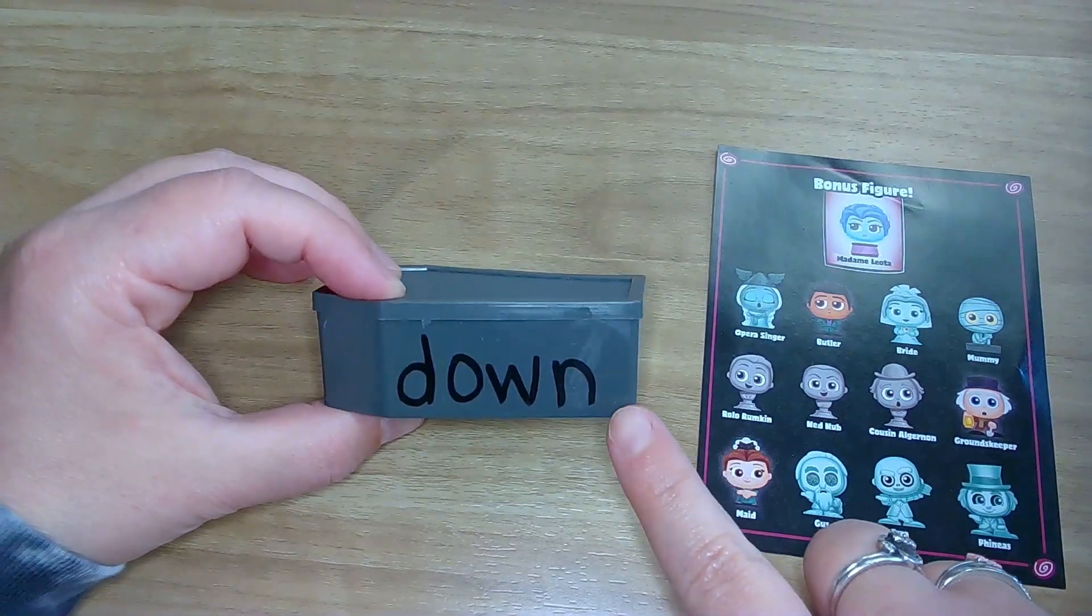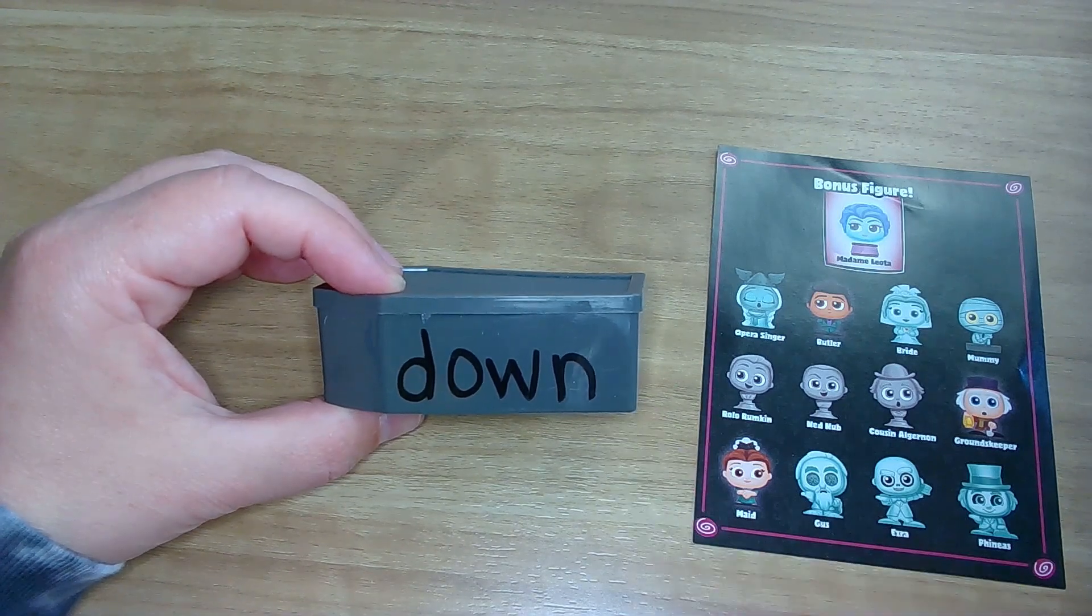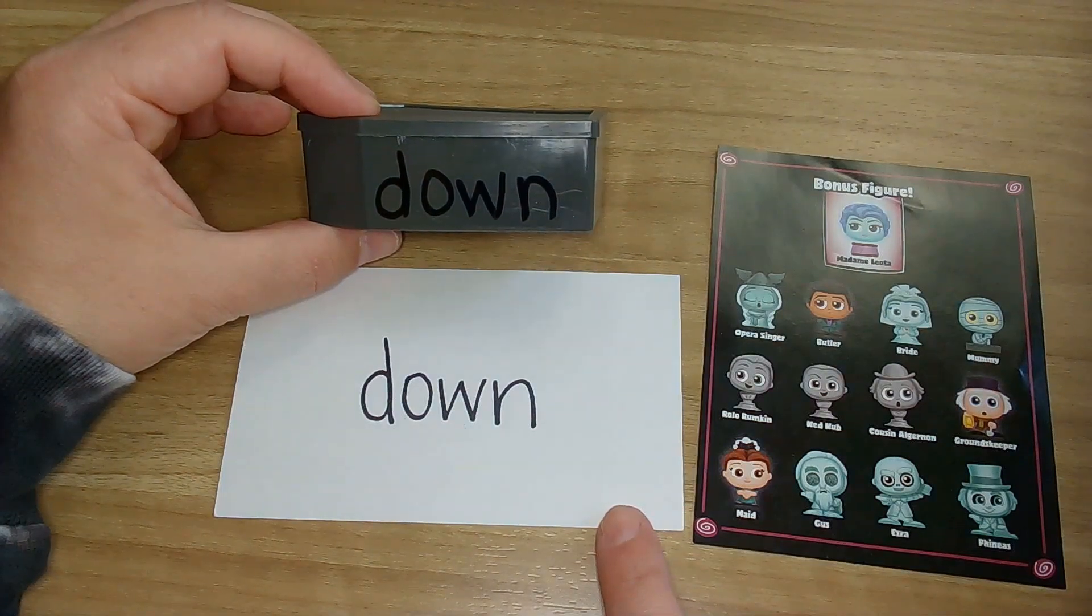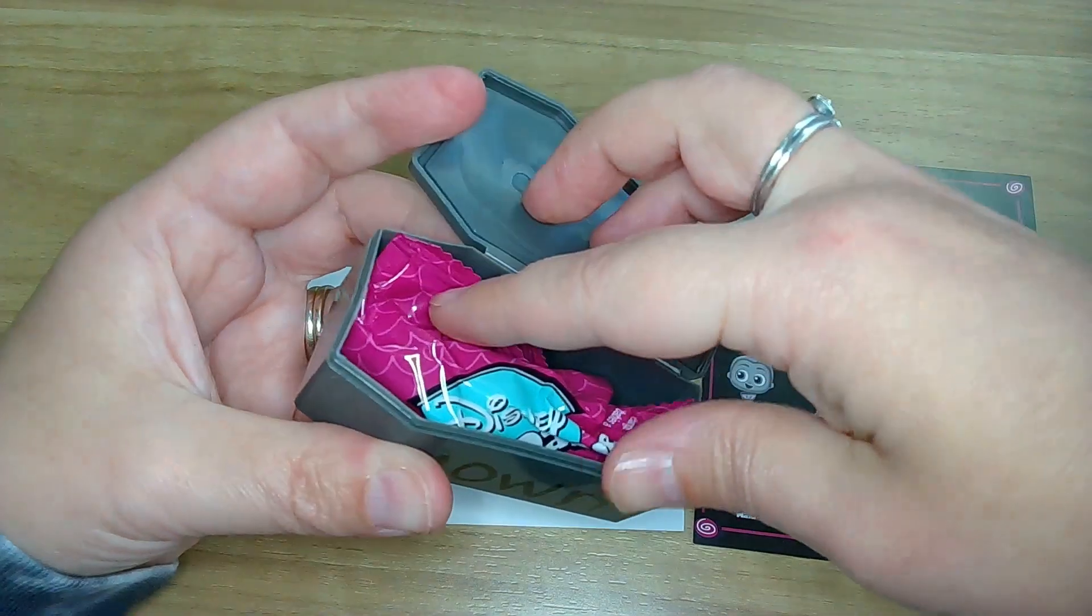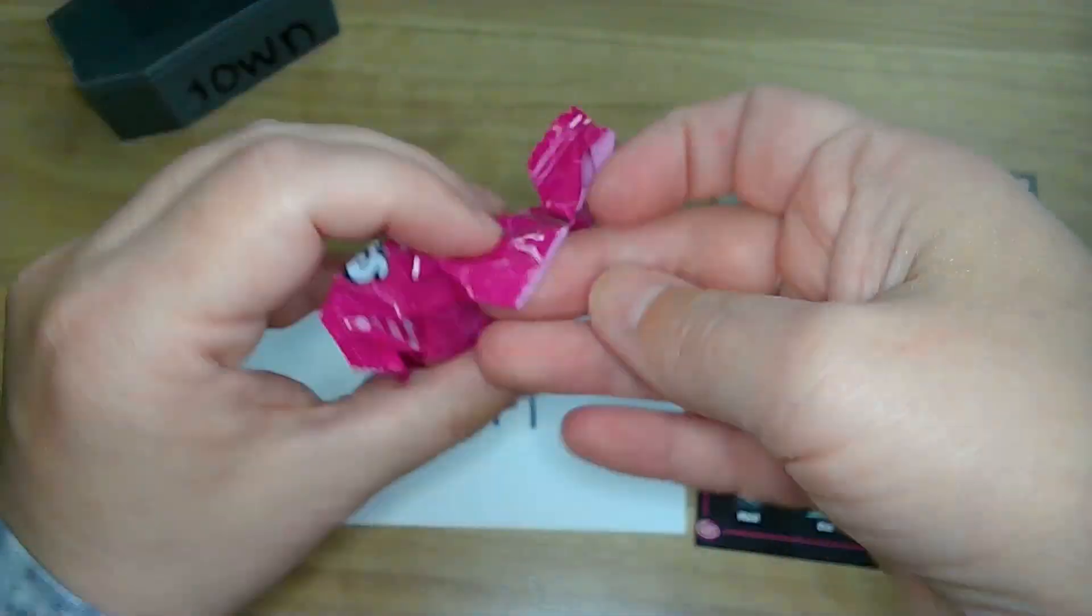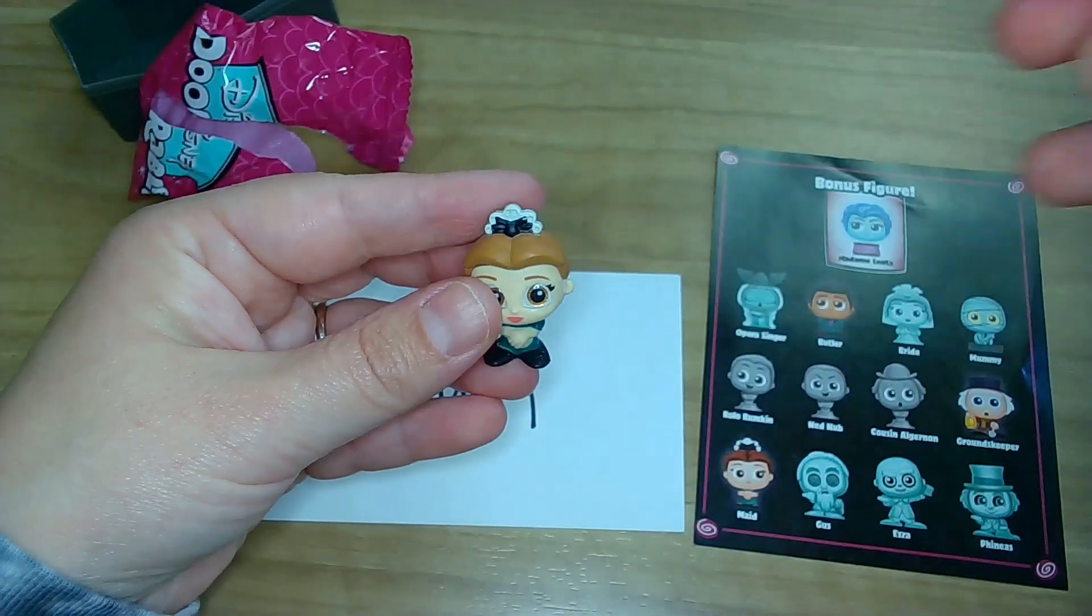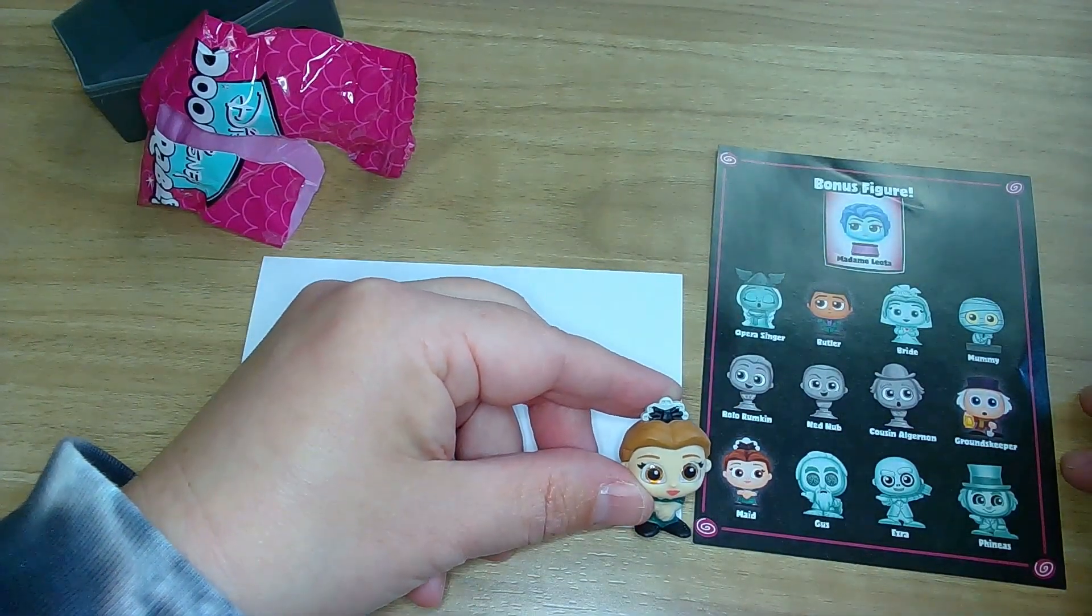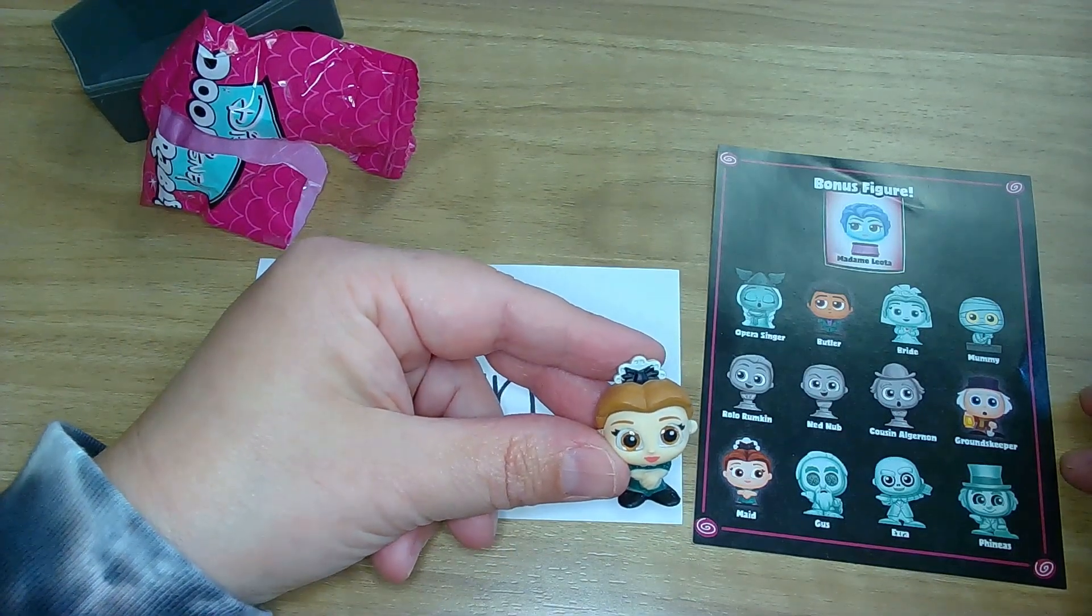Okay. Next word. Look at your words. Oh my goodness. You found that one so fast. Here we go. Down. Down. Awesome. Okay. Let's see who is in down. All right. Let's get this open. We know we got to open this. Okay. Here we go. Oh my goodness. Okay. Let's look at our thing. We have the maid. The maid. All right, maid. Let's see who the last one is.